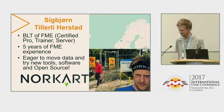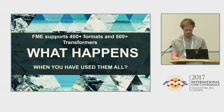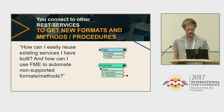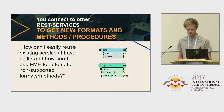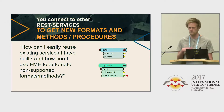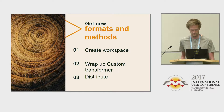FME supports 400 formats and 500 transformers, so when you have used them all - what then? You connect to new services or processes, and you can also use FME to automate non-supported methods and wrap these into custom transformers like the green one at the bottom. Linked transformers mean that when you update them, all workspaces that use them also get updated. If they are embedded, you have to update them manually.